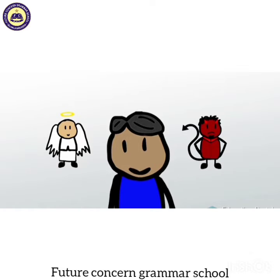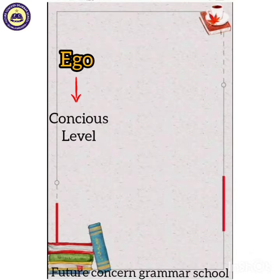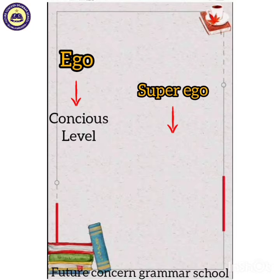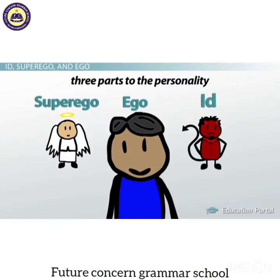Yeh scenario Freud ki personality theory se bahut zyada milta hai. There are three parts of personality: id, superego and ego. Ego is on the conscious level, superego is on the pre-conscious mind, and id is in the unconscious mind. Id develops first, then ego, and lastly superego.